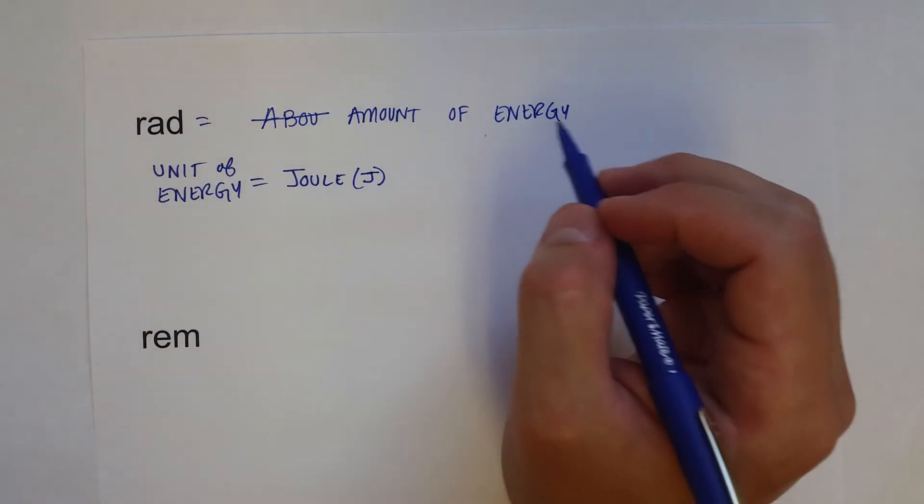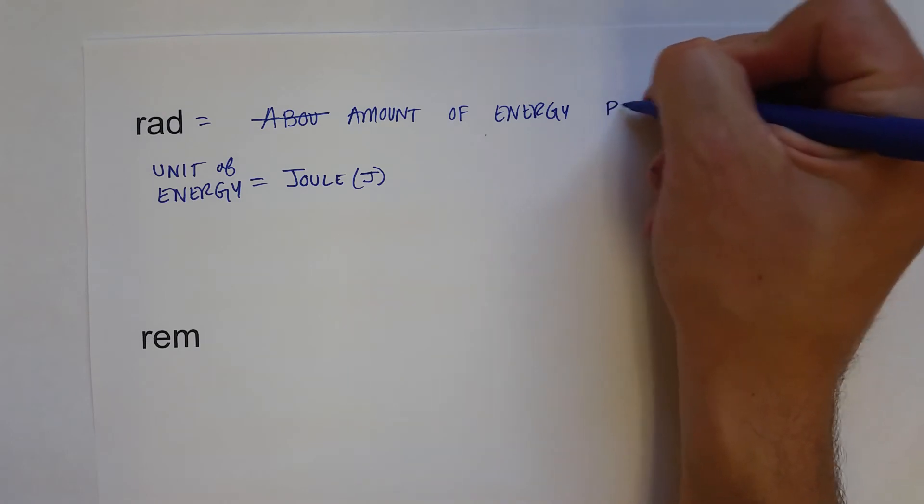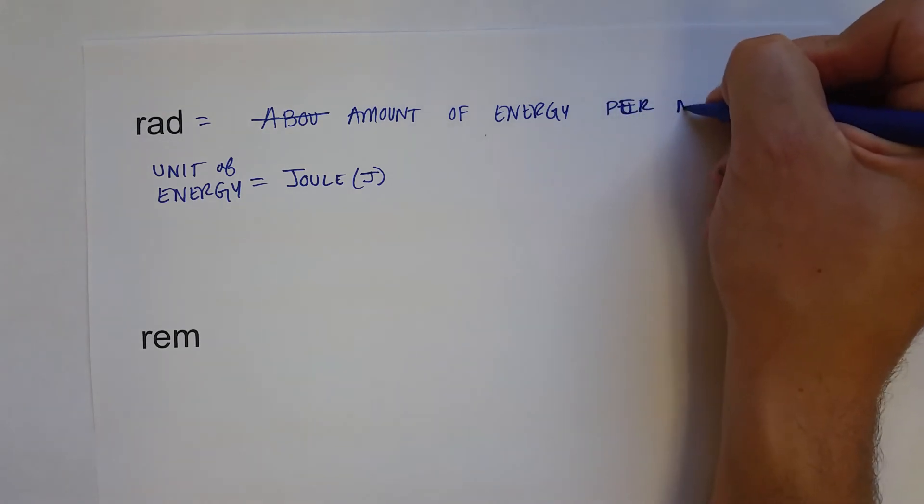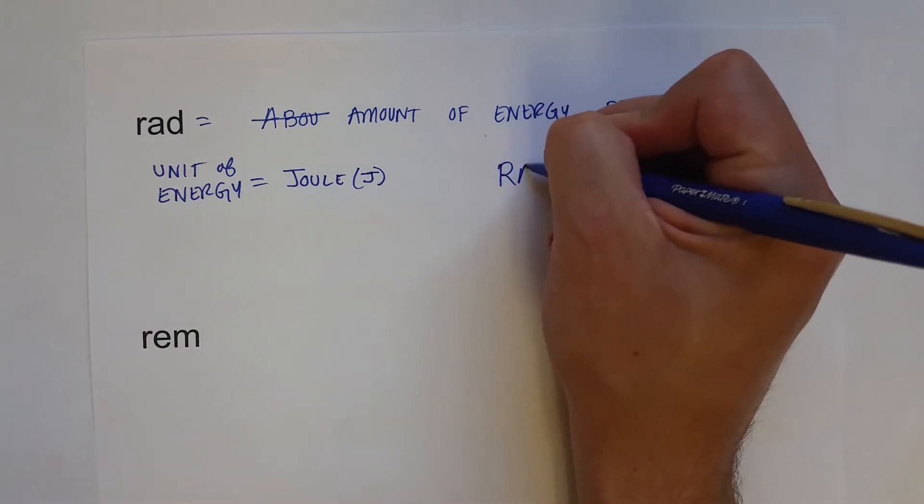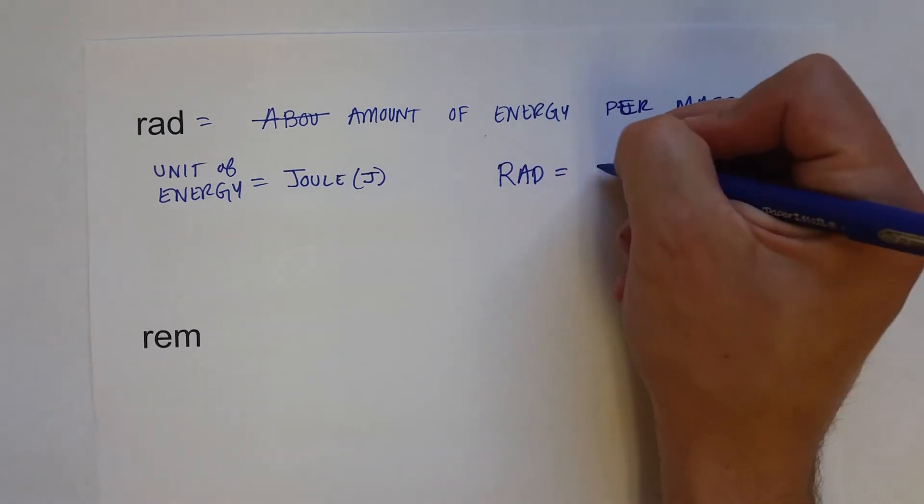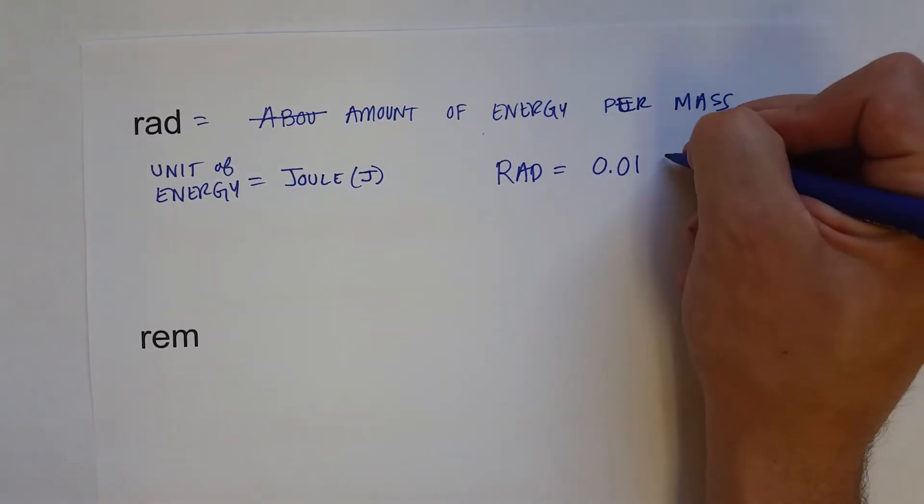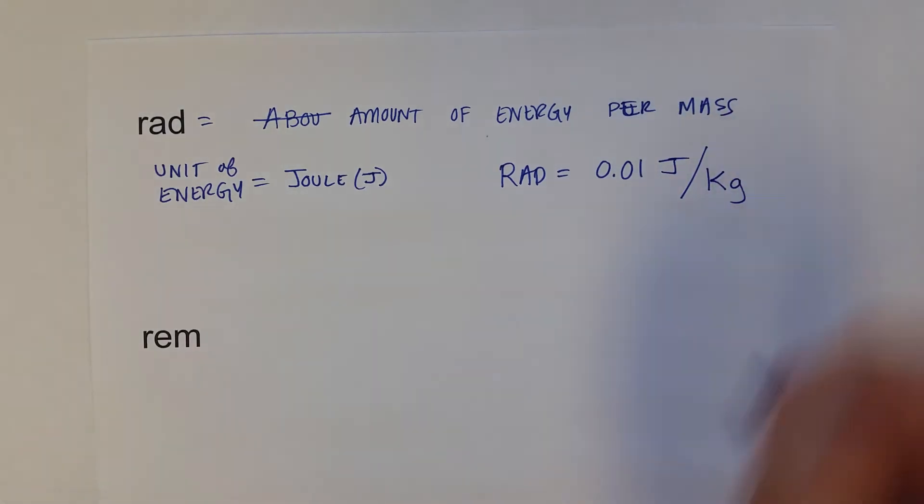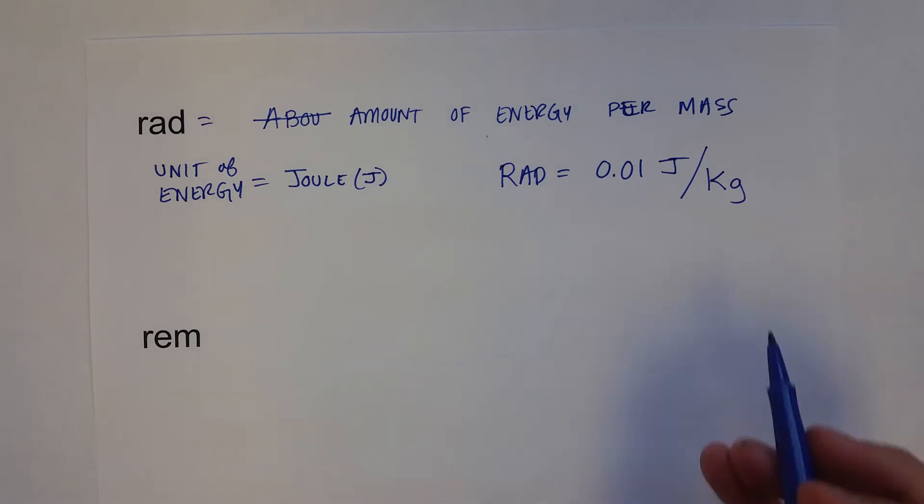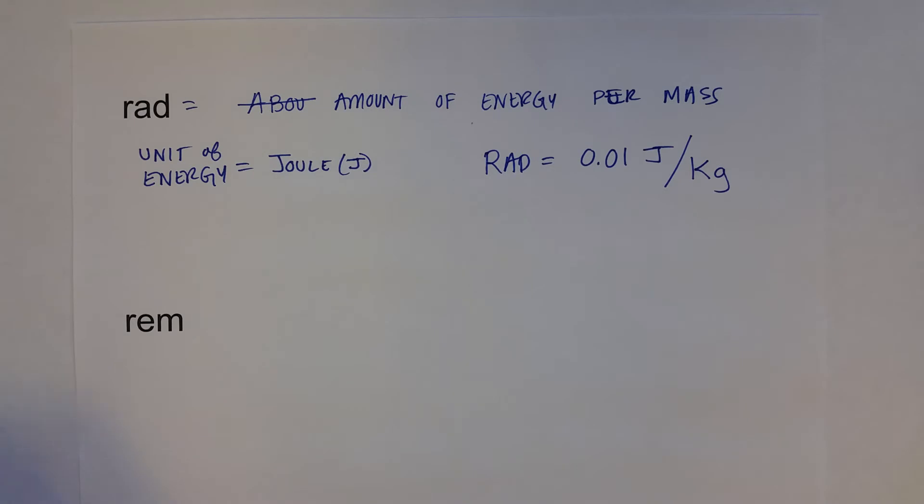So the amount of energy in joules per mass, per unit mass. Or more specifically, a rad is equal to 0.01 joules of energy absorbed per kilogram. So it takes into account the mass of the individual that's absorbing this radiation, which is important for establishing exposure and health repercussions.